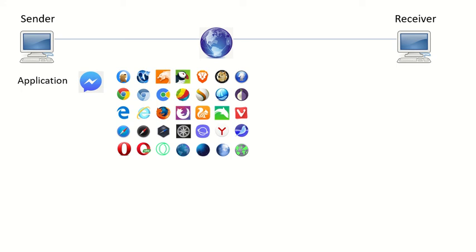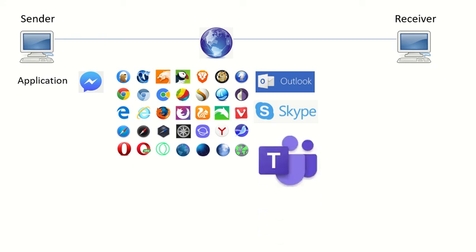Web browsers include Opera and Brave. Aside from web browsers, it can also be Outlook, which you use to send and receive emails, or Skype, which you can use to make and receive phone calls over the internet — you can even do video calls using Skype. We also have Microsoft Teams, which you use to conduct virtual or online training.